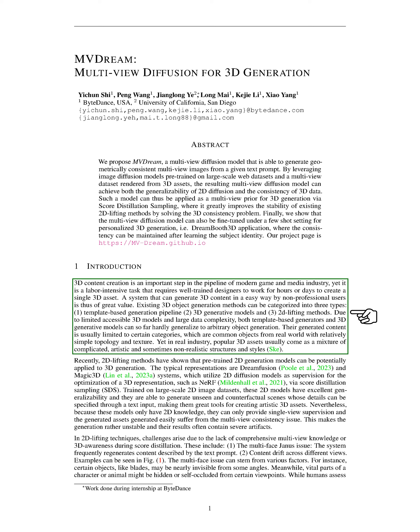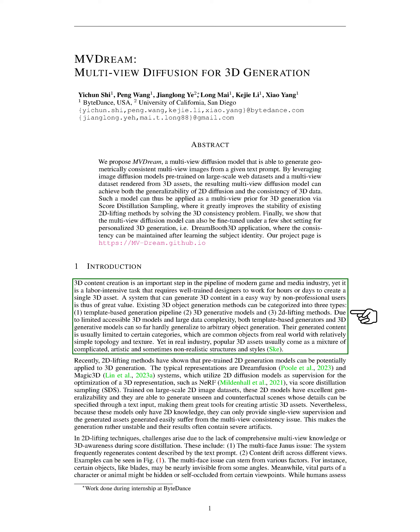In contrast, the industry often requires 3D assets that are complex, artistic, and sometimes non-realistic. Recently, 2D lifting methods have shown promise in this area. These methods, exemplified by systems like DreamFusion and Magic 3D, use pre-trained 2D generation models to guide the optimization of a 3D representation. These 2D models, trained on large datasets of 2D images, can generate new and unique scenes based on text input, making them excellent tools for creating artistic 3D assets.